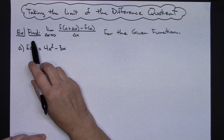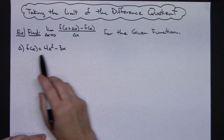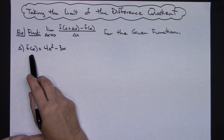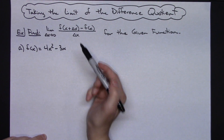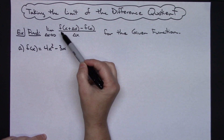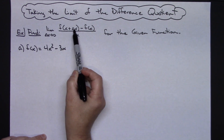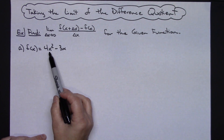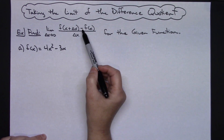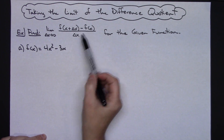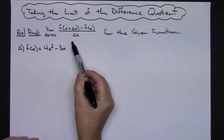So that's what I'm going to be doing in this example. The problem tells you to find the limit as delta x approaches zero of the difference quotient for the given function, and in this example the function is f(x) = 4x² - 3x. Basically this says to take x plus delta x and plug it into the function in every place there is an x. Then it says to subtract the function itself — since it's a binomial, we need to put a set of parentheses around it — then divide by delta x.